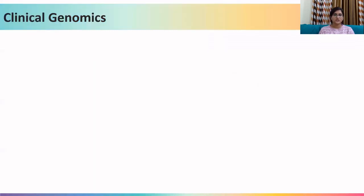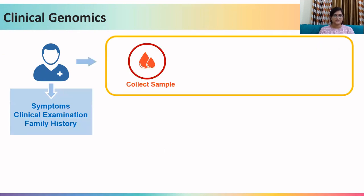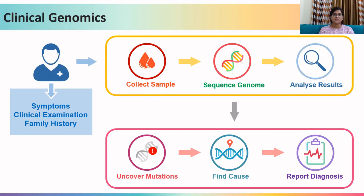In our previous sessions, we learned about clinical genomics. When a clinical investigator suspects a patient to have a clinical disease on the basis of symptoms, clinical examination, and family history, he or she collects the sample, sends it to the sequencing lab, analyzes the sequencing result, and finds that an average individual has more than 50,000 variants. Even if narrowed down to only a few genes, the number of variants would still be in the hundreds or thousands. To determine the causative variant implicated in the suspected disease, one needs to annotate these variants and understand their clinical implications.